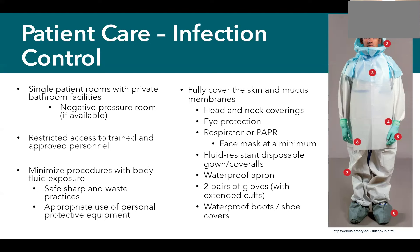Use all appropriate personal protective equipment — essentially covering skin and mucous membranes from head to toe. This includes head and neck coverings, eye protection, a respirator or PAPR (at minimum a face mask), fluid-resistant disposable gowns and coveralls, a waterproof apron given the risk of bleeding or vomiting, two pairs of gloves with extended cuffs, and waterproof boots or shoe covers. Given the potential for aerosolization, a respirator or PAPR is strongly preferred over just a face mask.